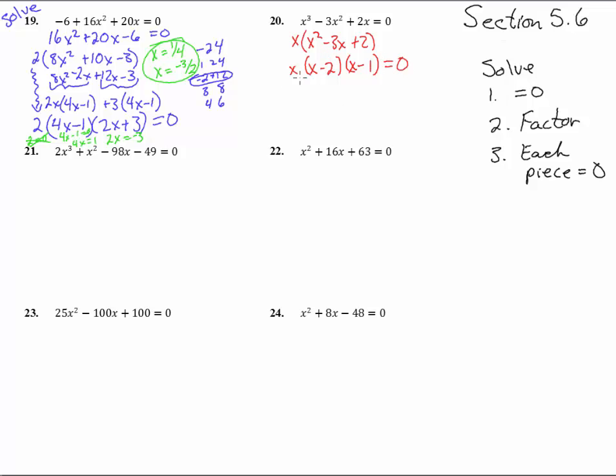So now we set each piece equal to 0. x equals 0, hey look that gave us an answer. Unlike this over here where it didn't. x minus 2 equals 0 gives us x equals 2. And x minus 1 equals 0, add the 1 over there, and we get x equals 1. And there we have it. Those three answers.